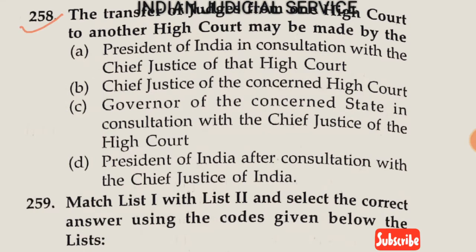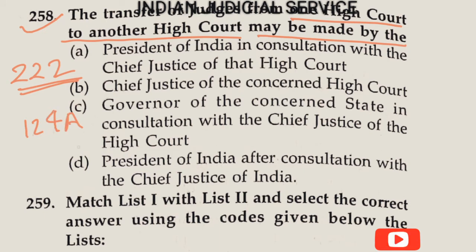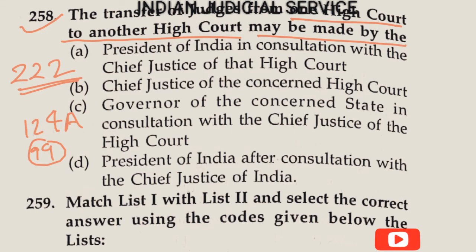Question number 258: The transfer of a judge from one High Court to another High Court may be made by whom? Article 222 deals with this, providing that the President may, after recommendation of the National Judicial Appointment Commission constituted under Article 124A by the 99th amendment, transfer a judge from one High Court to another High Court.